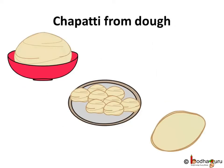You must have seen your mother making roti or chapati from the dough. She divides the dough into many small balls and then rolls out a round chapati using the rolling pin. The uncooked chapati smells like dough, the color hasn't changed — only the shape has changed. That is, a physical property has changed.